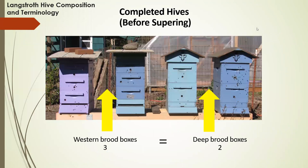These are all completed hives before supering, but they look a little different — just different hive configurations for different styles of beekeeping. Over on the left you see three western brood boxes, which equates to two deep brood boxes. This is enough to house your colony and allow them to raise their brood and have their own food supplies. The reason we may do three western brood boxes versus two standard deep brood boxes is that western boxes are a lot easier to lift. Typically at the store I use the standard two deep brood box configuration, but at home I actually do westerns — it makes it a lot easier when you're lifting everything at once.